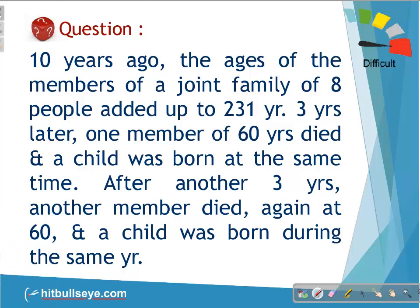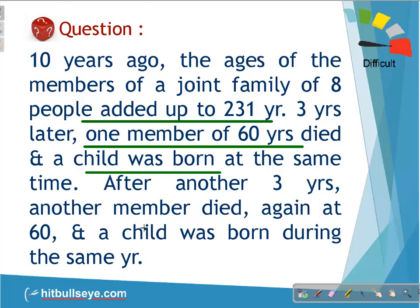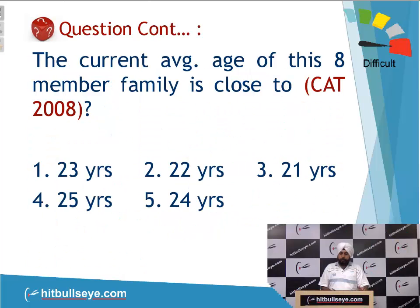In this question, the ages of a family 10 years ago add up to 231. Three years later, one member of 60 years dies and a child is born. After another three years, the same thing happens once again. After that, he asks about the current average age of this eight-member family.